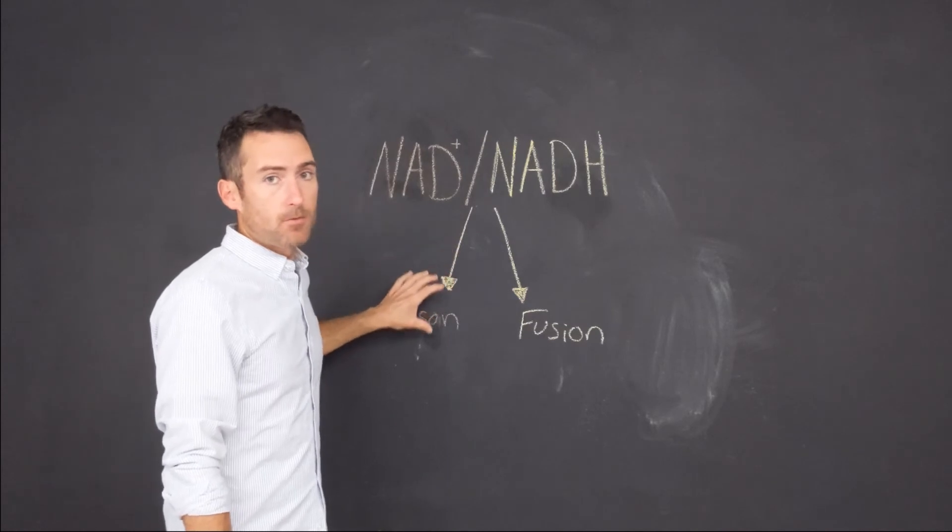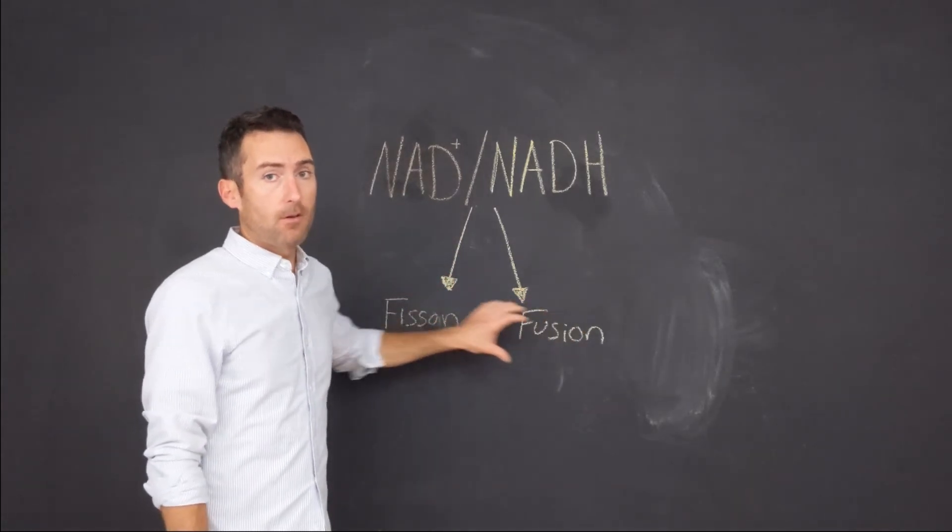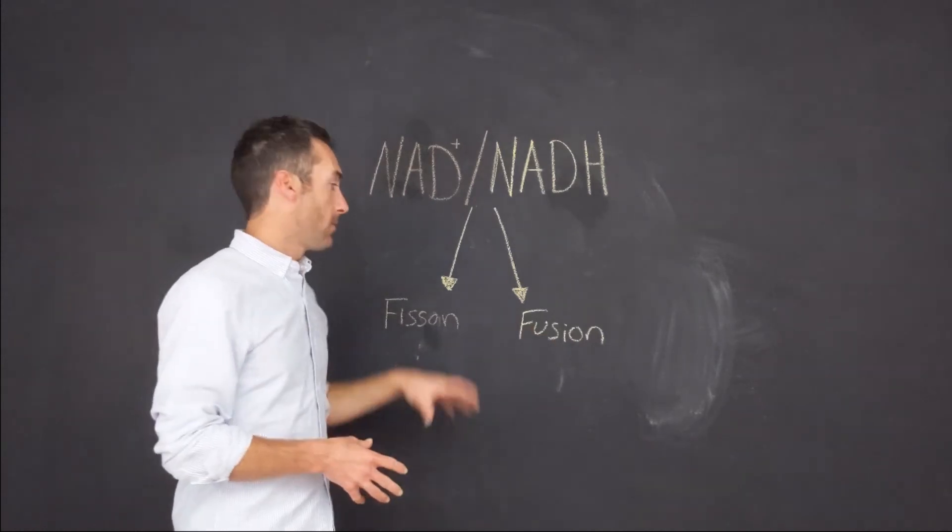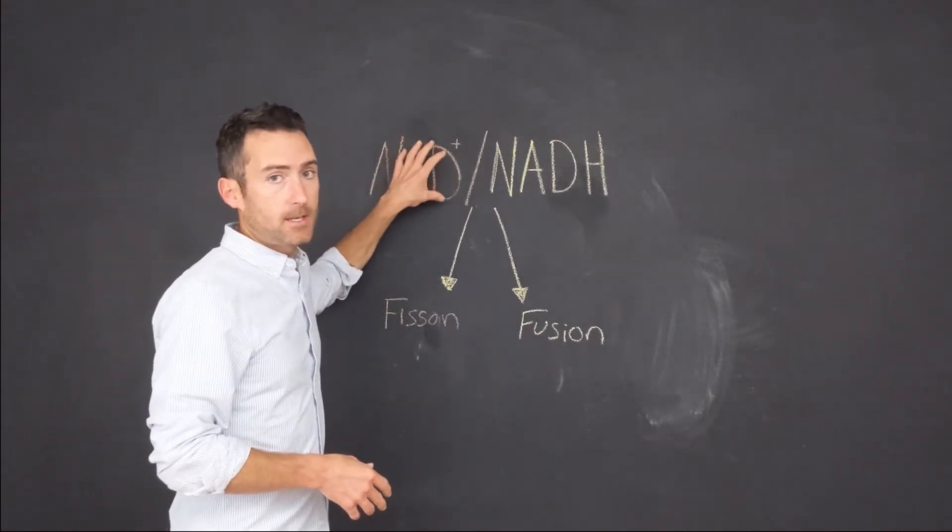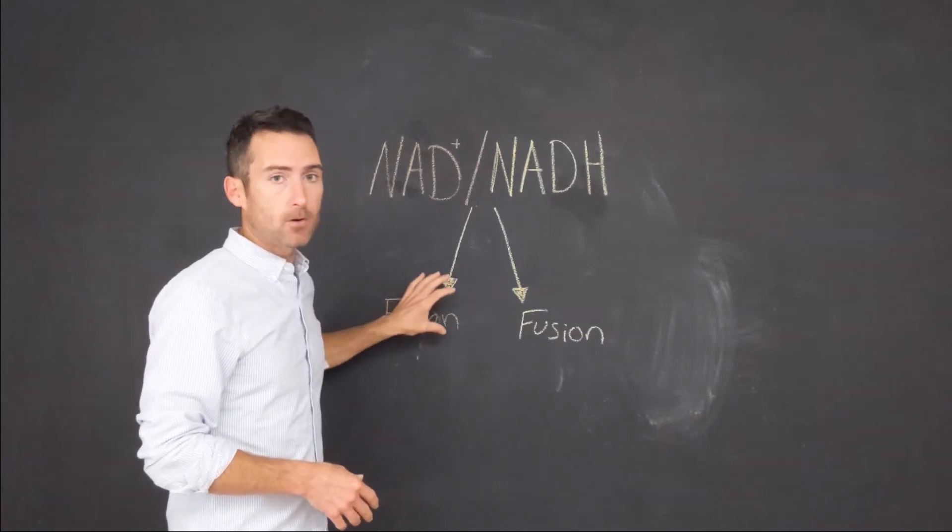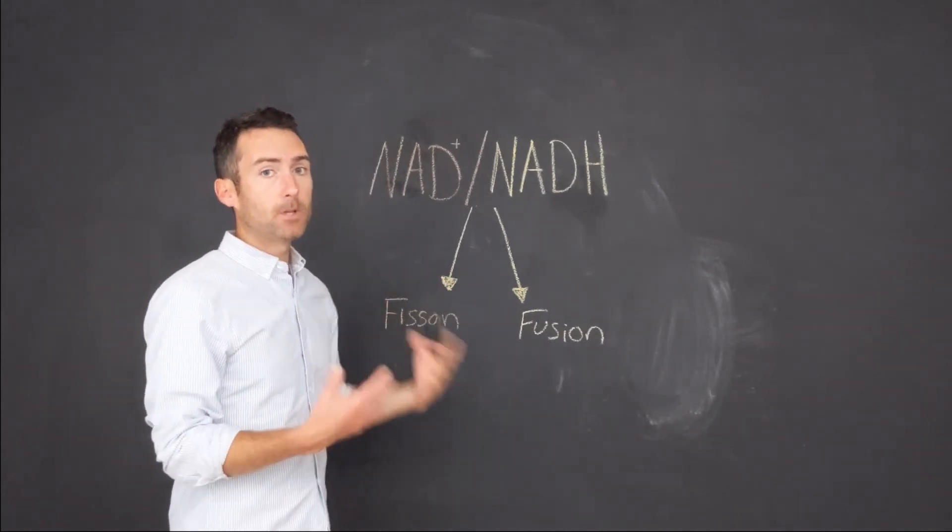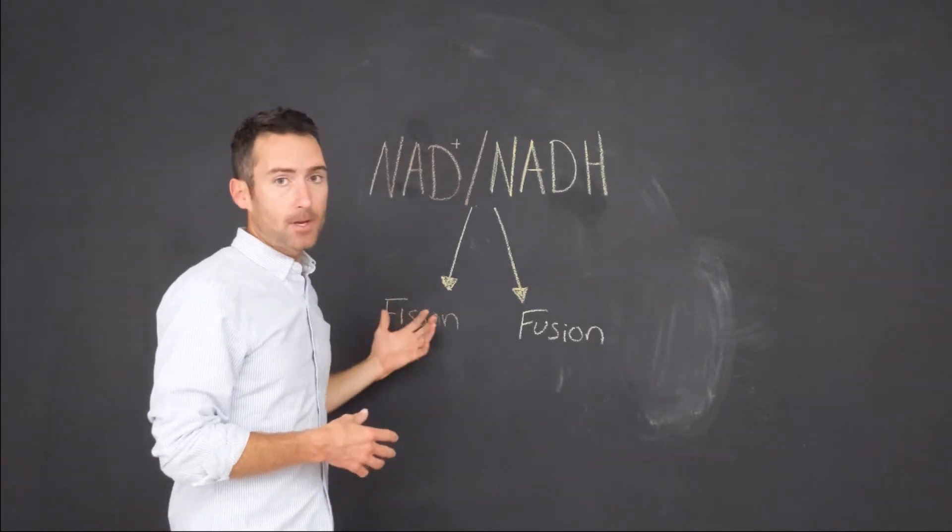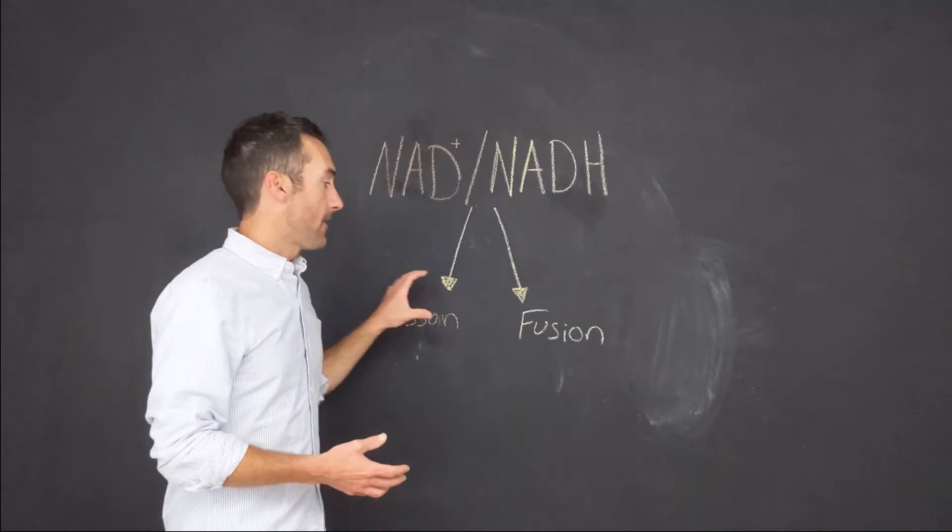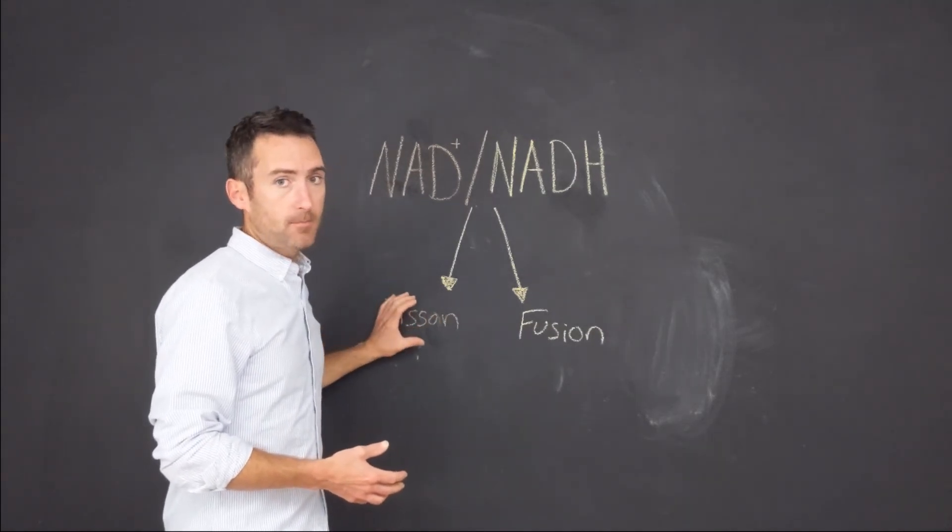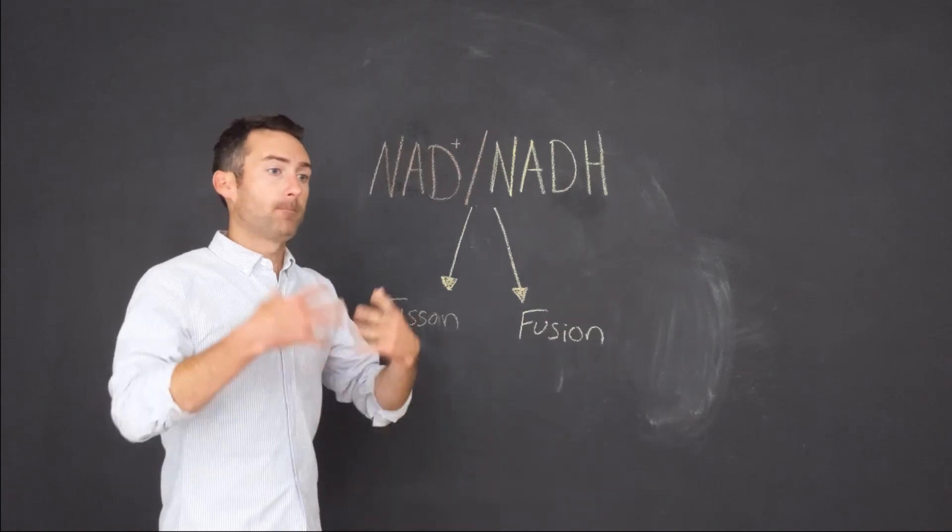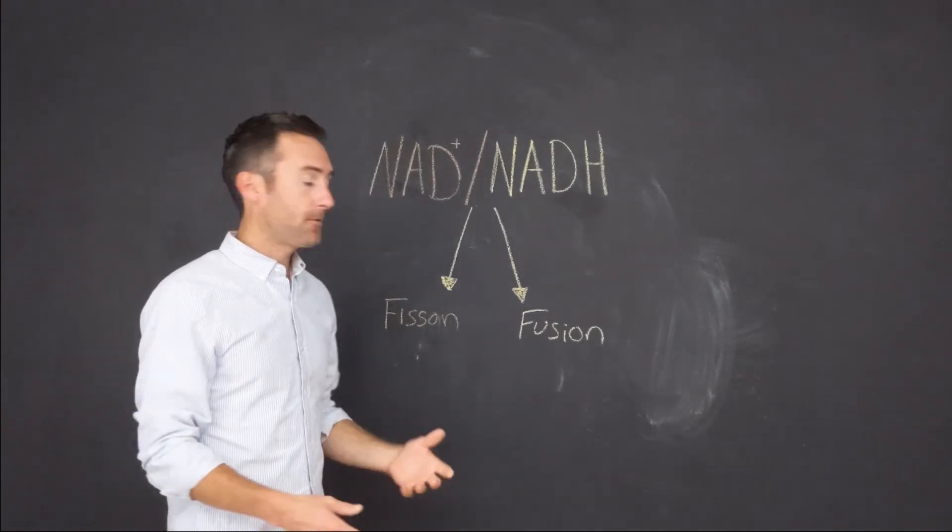actually going to create fission and fusion. Fission is actually the splitting or the taking apart. So when we increase our NAD, cellular fission is happening in the mitochondria—so the mitochondria are actually splitting. And what is happening is it's creating mitochondrial biogenesis. And then when the mitochondria are in biogenesis, the weaker mitochondria are killed off through mitophagy,